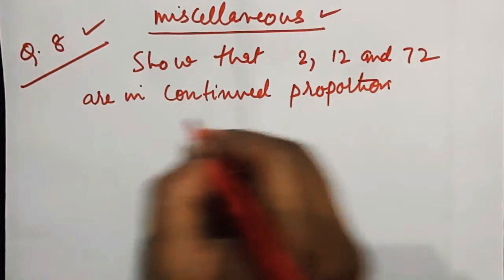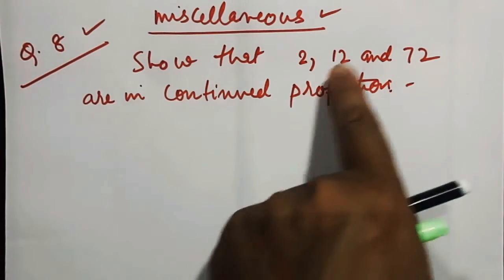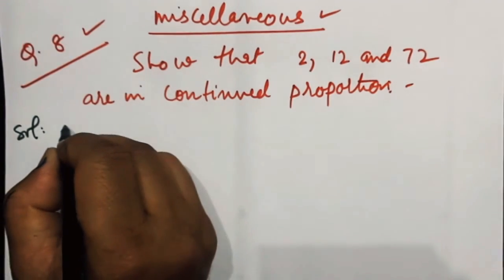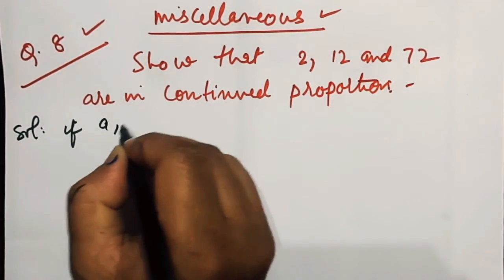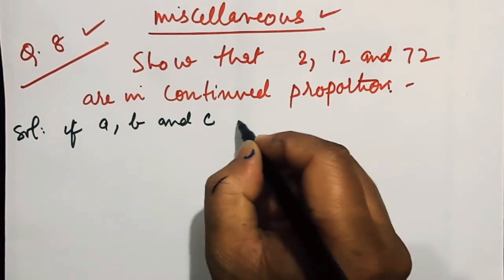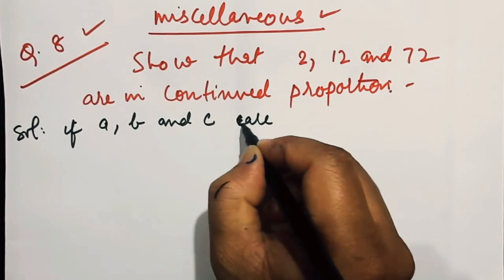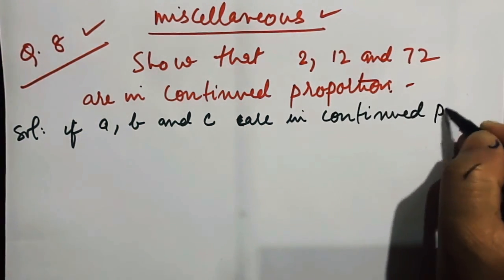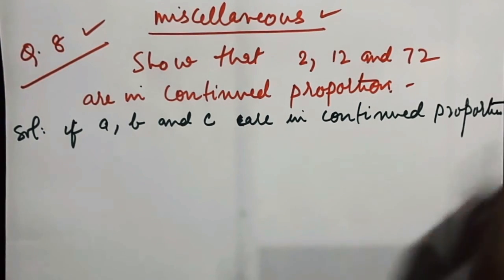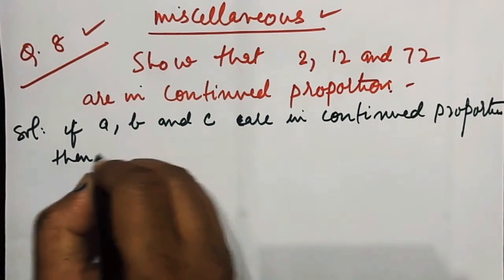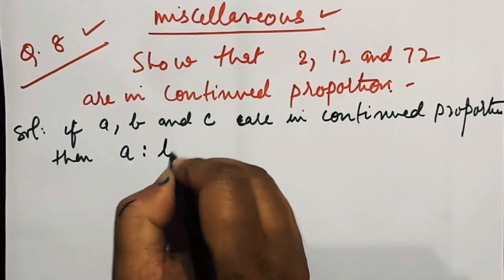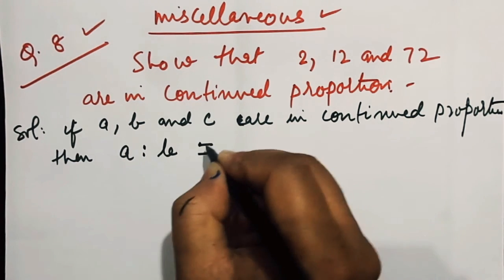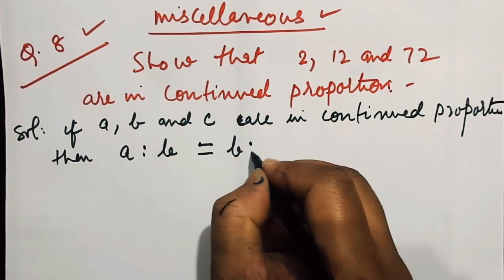You know that when 3 numbers are in continued proportion: If A, B, and C are in continued proportion, then A is to B, the ratio of A and B, will be equal to, or is in proportion to, B is to C.